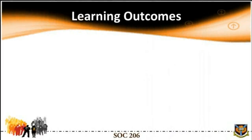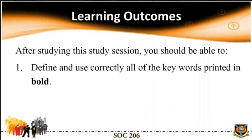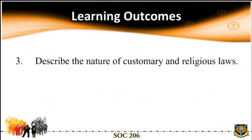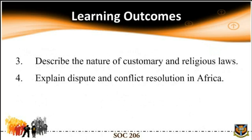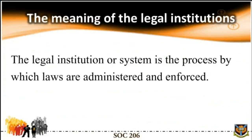Learning outcomes for Study Session 10: after studying this session, you should be able to: one, define and use correctly the key words; two, list and explain at least two major methods of social control; three, describe the nature of customary and religious laws; four, explain disputes and conflicts resolution in Africa; five, discuss the problem of ethnic pluralism in Africa.